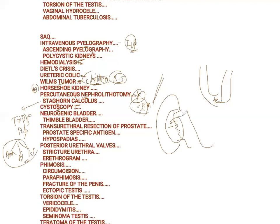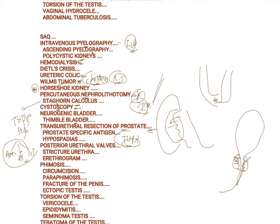Cystoscopy is a surgery performed to visualize the inside of the bladder. Thimble bladder is a condition in which the bladder becomes convoluted. Transurethral resection of the prostate — TURP — is a procedure where we don't have to open the anatomy; we go transurethral and resect the prostate, then put a Foley's catheter for 3 weeks and the tissue heals over the catheter.